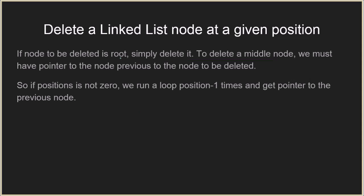If the node to be deleted is the root, we simply delete it. To delete a middle node, we must have a pointer to the node previous to the node to be deleted. We need to update the next pointer of that previous node to the next pointer of the node to be deleted. If position is not zero, we run a loop position minus one times to get the pointer to the previous node.